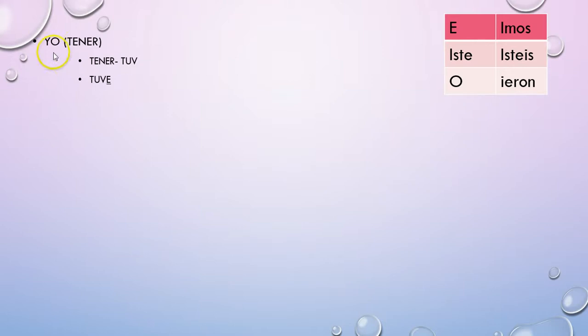Let's do some practice. Up in the top right-hand corner I have my irregular verb endings. When you have a verb that you know is irregular, you're going to put it first in the spelling change — like TUV, ESTUV — and then add the appropriate ending. So to conjugate TENER in the yo form, TENER changes to TUV and then I add my appropriate ending, which is -e. So that's where I get TUVE.